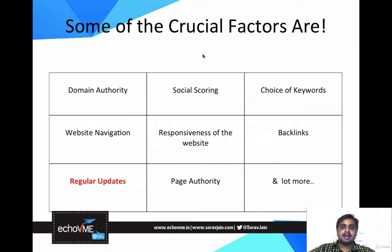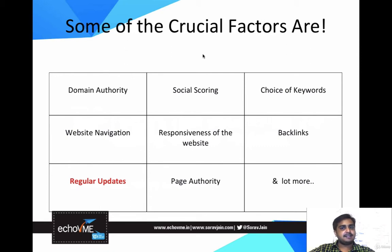The fourth factor is website navigation — how smartly your website is designed and how easily a person can navigate from one page to another with just a few clicks. Responsiveness of the website matters a lot; if your website is not mobile-friendly, you are definitely going to lose social scoring. It is essential that your website is responsive. If you're creating a website on WordPress, you can easily have a mobile-friendly, responsive website.